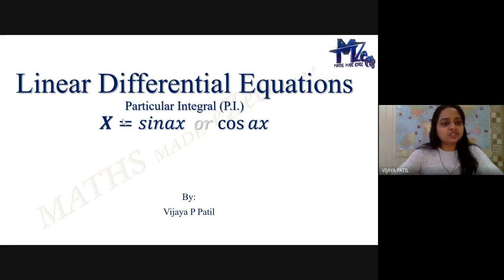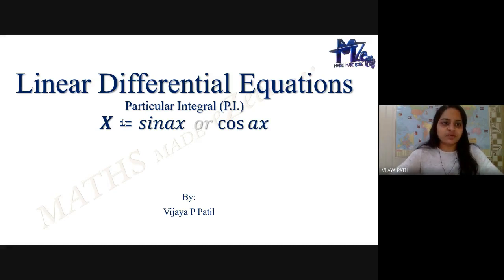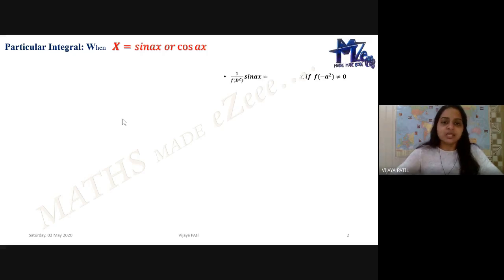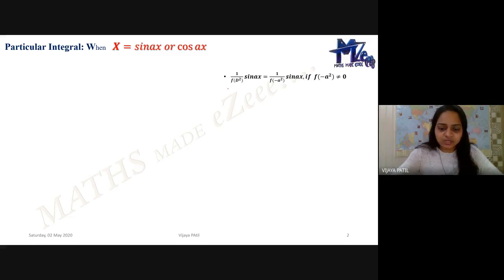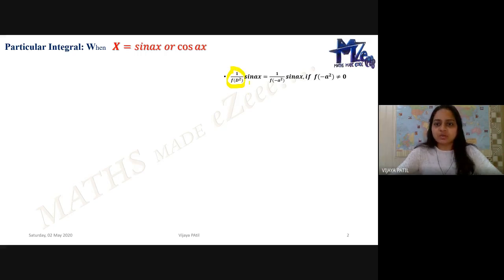Hello everyone. In continuation with linear differential equations, we will be dealing here with the particular integral when the function has been given as sin(x) or cos(x) kind. This is what: 1 upon f(D²) sin(ax). That means if I have to operate 1 upon f(D²) on sin(ax), then it is nothing but 1 upon f(−a²) sin(ax).